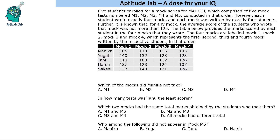We are also given that the average score of students was not more than 125. Since 4 students write each mock, the total per mock must be less than or equal to 500. Now let us formulate a table and solve this set.